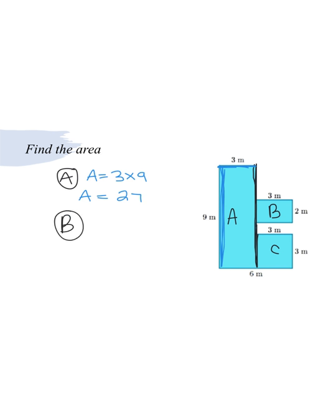For B, we're going to multiply 3 times 2. Area equals 3 times 2. And area here would be 6.